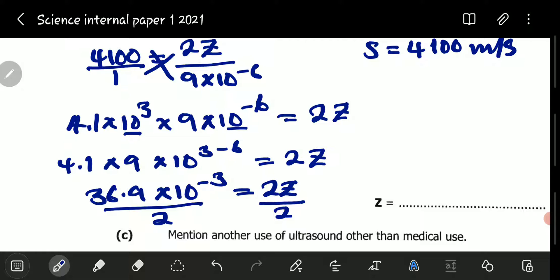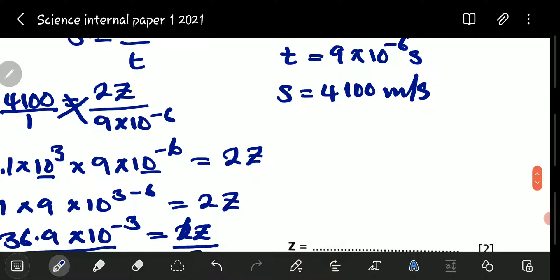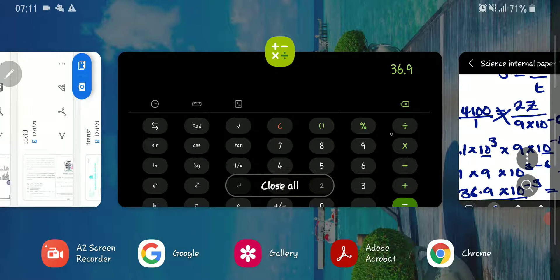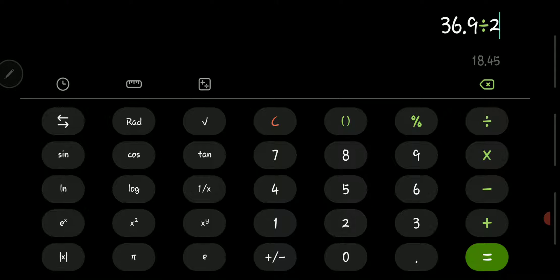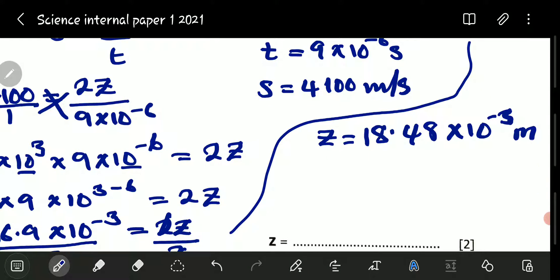So, we're going to divide that by 2. So, the 2 goes, we remain with Z. So, we'll have Z is equal to 36.9 divided by 2, which is 18.48. So, Z is equal to 18.48 times 10 to the power of negative 3. And these are meters.